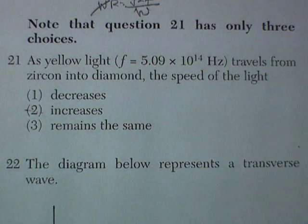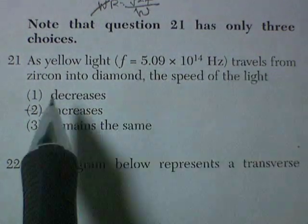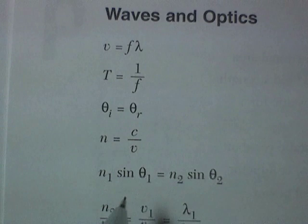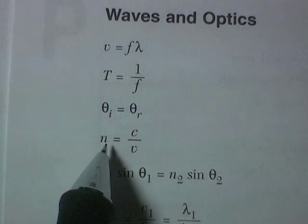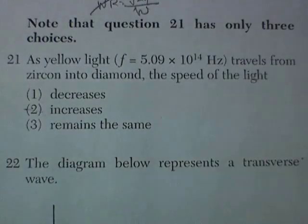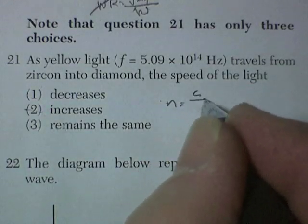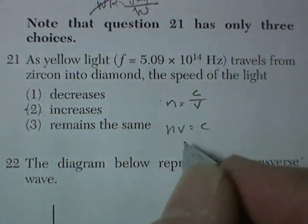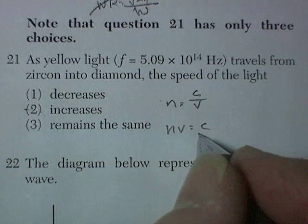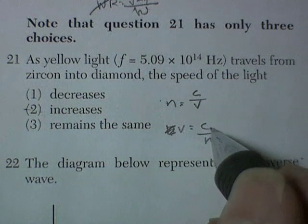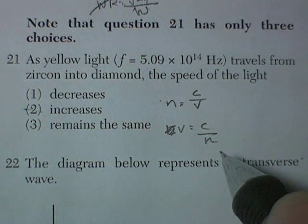Question 21 is in waves. It says, yellow light travels from zircon into diamond, the speed of the light. So I need the formula for the speed of light in a material. And it gets me right here. The index of refraction of the material is equal to the speed of light in a vacuum divided by the speed of light in the material. So let's write that down. N is equal to C divided by V. And V is equal to C. And so V is equal to C divided by N.